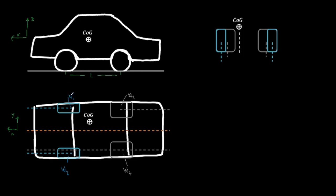We also need to calculate the front axle weight, so that's just W1 plus W2. The weight on the rear axle WR is equal to W3 plus W4, and the total car weight W is just all of those summed together. The first thing we're going to calculate is the position along the wheelbase, because that's the easiest.